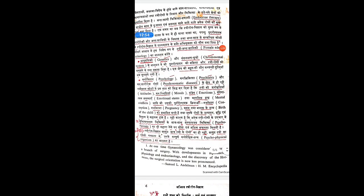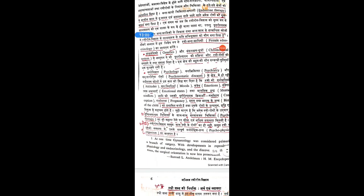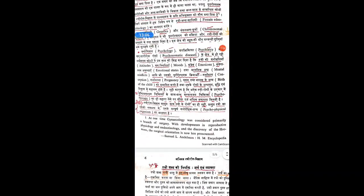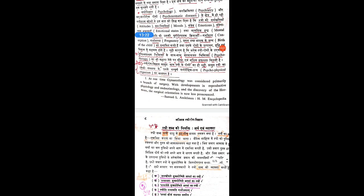Genetics and chromosomal disorders can also be included under Stri Roga or gynecology. Psychology and psychosomatic disorders — moods, emotions, emotional stress — come under obstetrics. Gynecology at one time was considered mainly a branch of surgery; with development in reproductive physiology and endocrinology and the discovery of hormones, the surgical orientation became less pronounced. But nowadays gynecology is still under surgery — that is why in Ayurveda, an MS degree (Master of Surgery) is given to candidates completing post-graduation in PTSR.